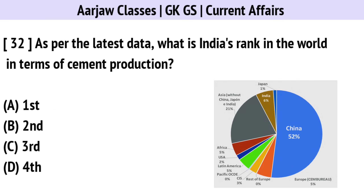As per the latest data, what is India's rank in the world in terms of cement production? The correct option is B — Second.